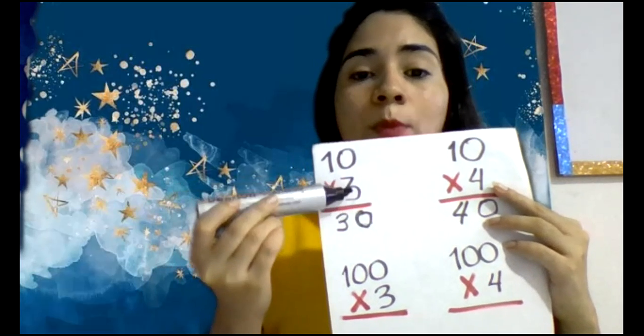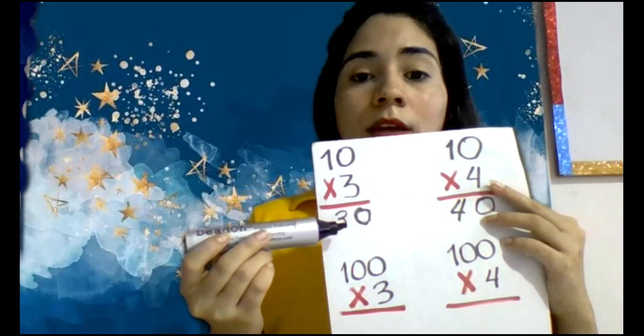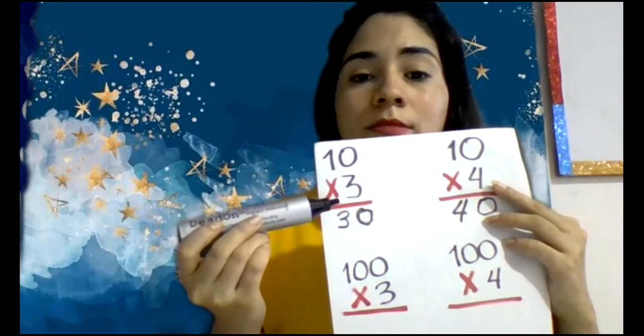Por ejemplo, 3 por 1, tres. Entonces, ¿cuánto es 10 por 3? Treinta.